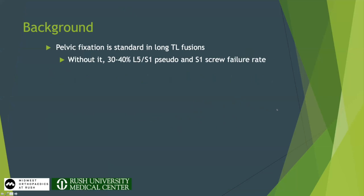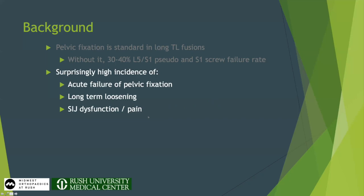Background on deformity: pelvic fixation screws are such a comfort blanket for degenerative and deformity surgeons. Whenever I have problems at the L5-S1 joint or have a big long stiff fusion, putting these big 100mm, 9-10mm screws in gives me a sense of security. But there's a reason we feel that way — pelvic fixation screws have really helped fix many revision scenarios and have reduced the L5-S1 pseudarthrosis rate in long deformity. However, what's hidden underneath that comfort blanket is that these screws actually have a surprisingly high incidence of failure.